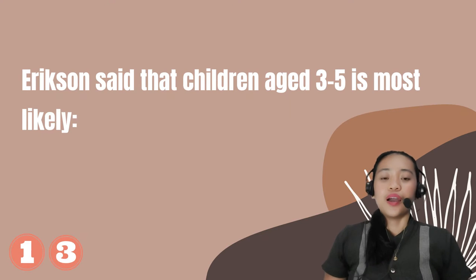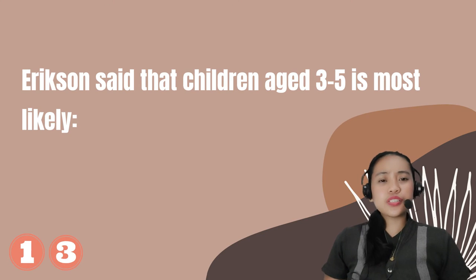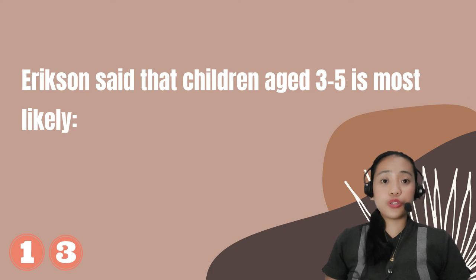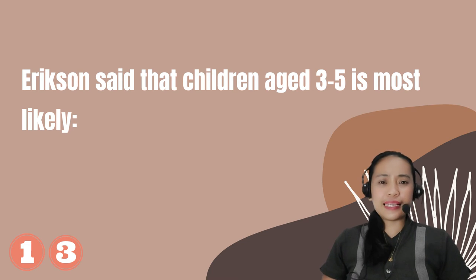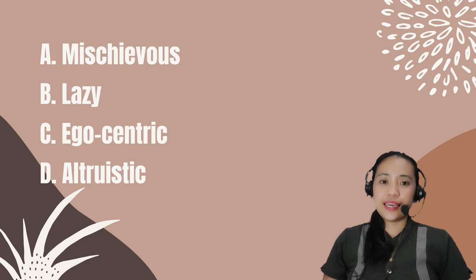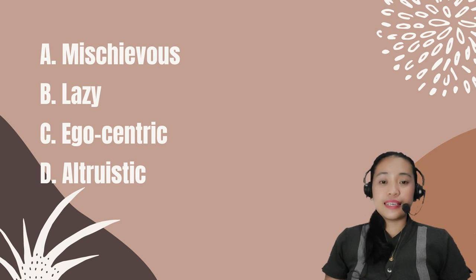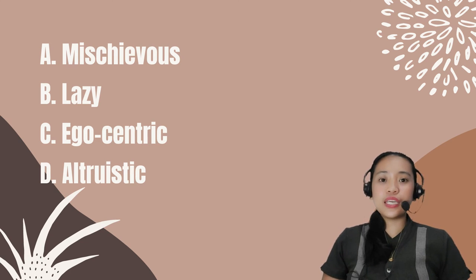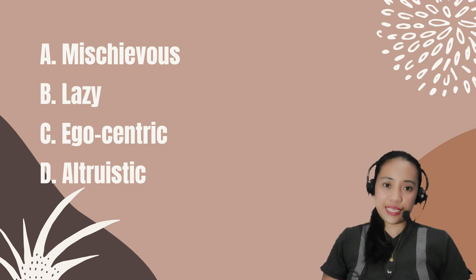Number 13. Erikson said that children aged 3 to 5 are most likely blank. A. Mischievous. B. Lazy. C. Egocentric. D. Altruistic.